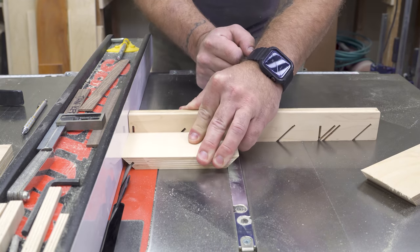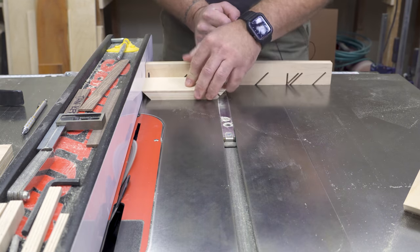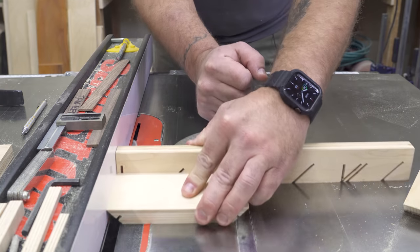We could also just use a miter gauge with an auxiliary fence, and that'll help us push the whole way through. So that's exactly what I'm going to do here. I'm going to make one groove. I'm going to turn it around. I'm going to run my other groove. And then I would just do that to all the pieces as I needed to.